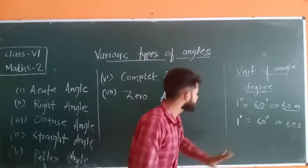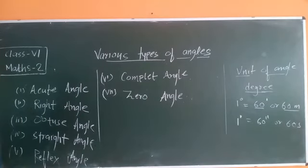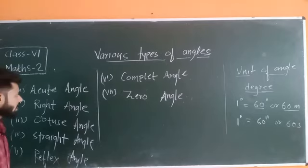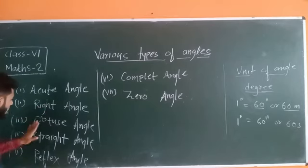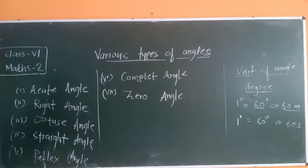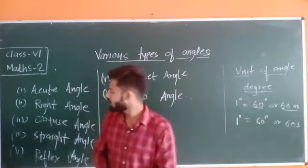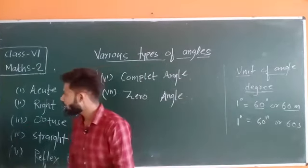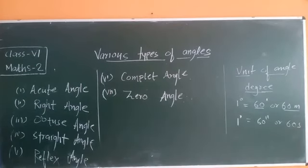Now let us move further to the various types of angles. There are a total of seven types of angles: acute angle, right angle, obtuse angle, straight angle, reflex angle, complete angle, and zero angle. We will discuss each one of these topics one by one.